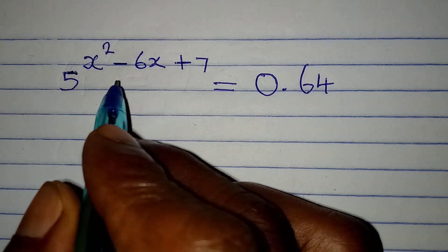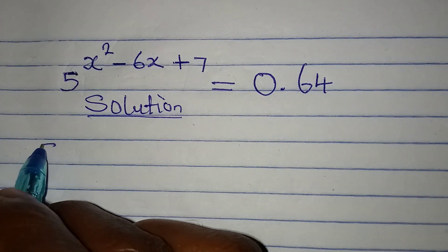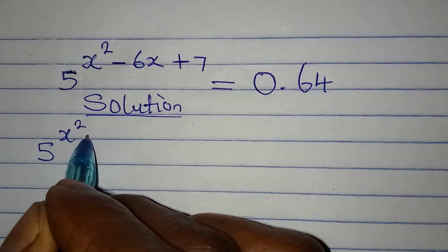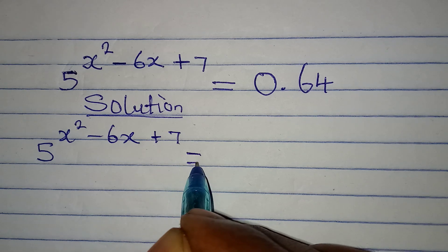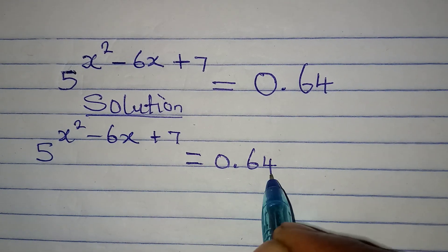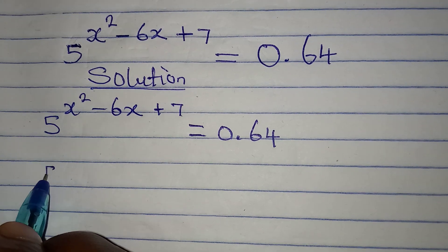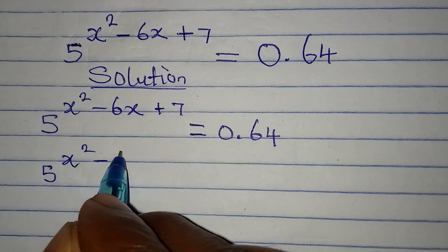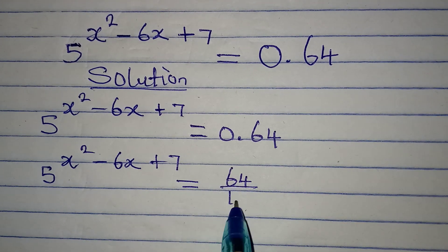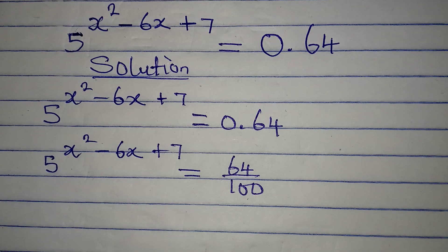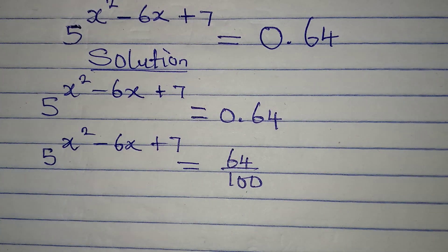Hello everyone, let's solve this problem very quickly. We have 5 to the power of x squared minus 6x plus 7, equal to 0.64. The first step I will take is to convert this amount to a fraction, so I have 5 to the power of x squared minus 6x plus 7 equal to 64 over 100. Remember, 64 over 100 is 0.64.